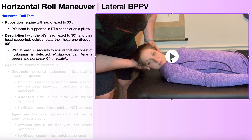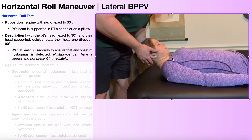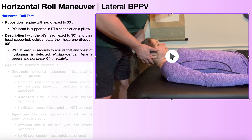What I just showed you was the horizontal roll maneuver assessing the right horizontal canal. However, I also need to assess the left horizontal canal. From this position, I'm going to bring her back to neutral rotation with 30 degrees of cervical flexion, and wait here for all symptoms to go away — that includes nystagmus, subjective reports of dizziness, nausea, etc.